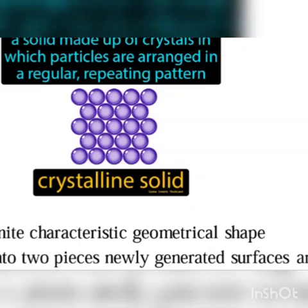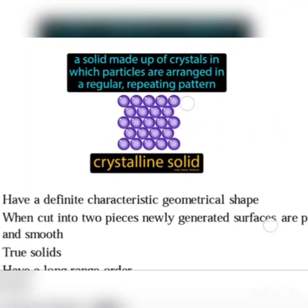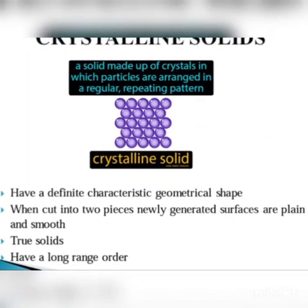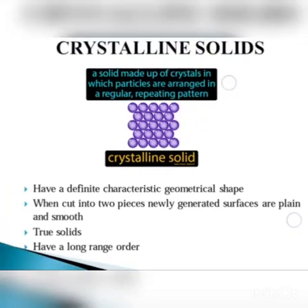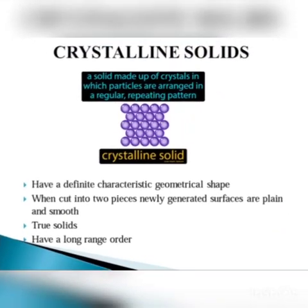Crystalline solids have a very smooth and plain surface because of their nice ordered structure. They are called true solids. They have long range order — a regular repeating pattern of arrangement throughout the entire crystal.